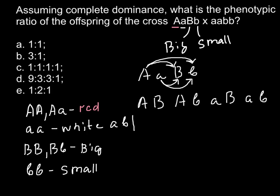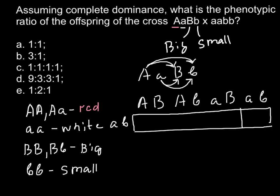Now we build the Punnett square. We divide this into four groups. In the first cell we have capital A small a, and capital B small b. In the second cell we have capital A small a, and small b small b. In the third cell we have small a small a, and capital B small b. And in the last cell we have small a small a, and small b small b.